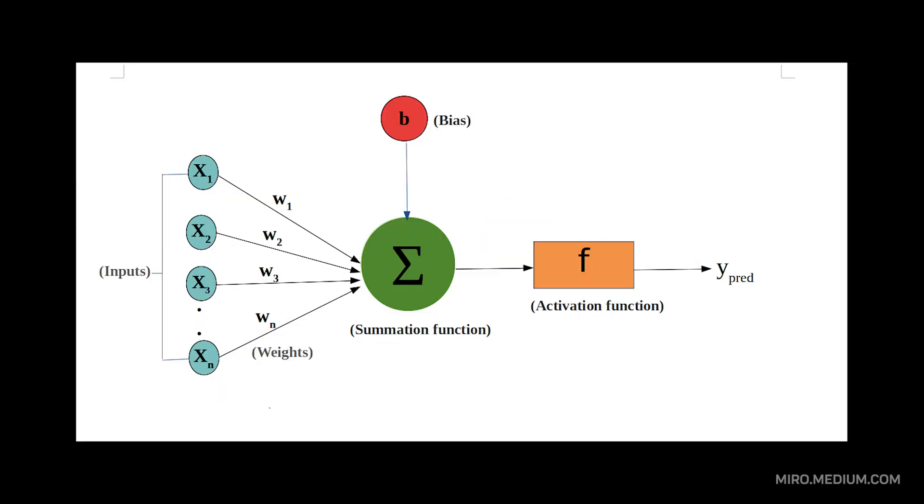Every deep learning model is built from three key components: neurons that process information, weights that determine how important each connection is, and activation functions that decide when neurons should fire.